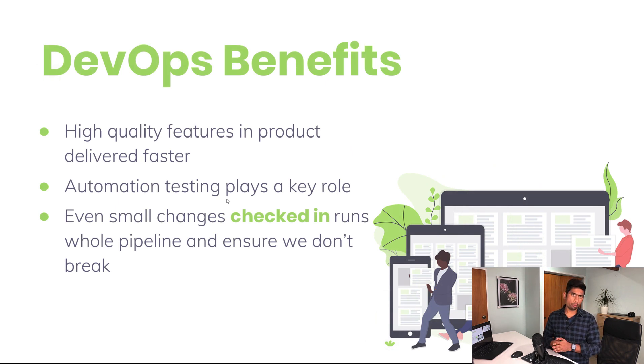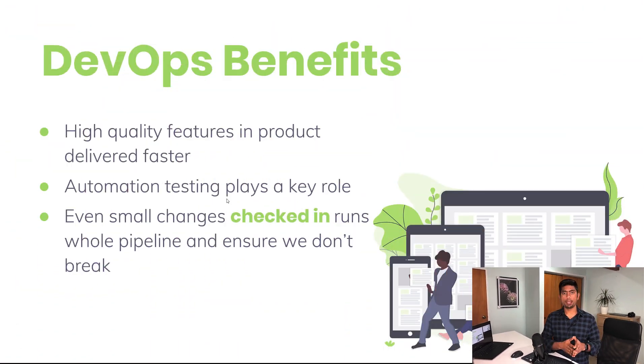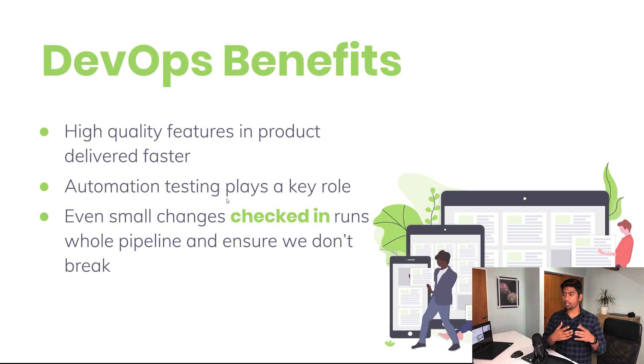There are key benefits of having DevOps in an organization. We can deliver features faster — that is the power of DevOps. Automation also plays a key role in DevOps. Automation is not just UI-based automation; it can be API testing or unit testing. If all these things are in place, the DevOps lifecycle will be even faster and we can ship the product to customers much more quickly.